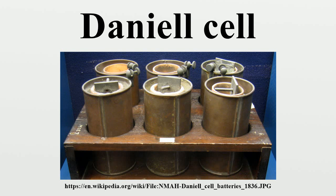Daniell states that a porous earthenware tube may be used instead of the ox gullet for practical ease, but this arrangement will produce less power. Another suggestion made by Daniell to improve the cell was to replace the copper with platinum and copper sulfate with platinum chloride, but he remarks such an arrangement would be perfect, but too costly for ordinary applications. It is the porous pot form of the cell that came to be widely used in telegraphy.